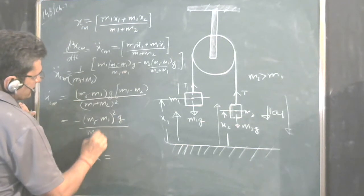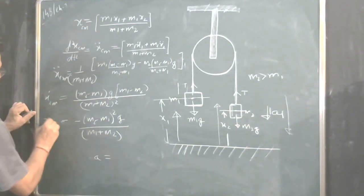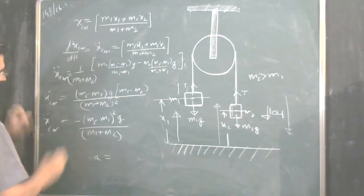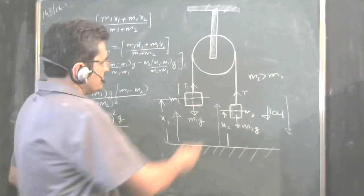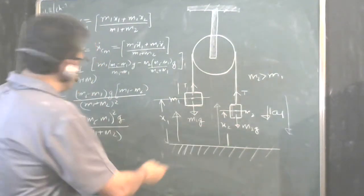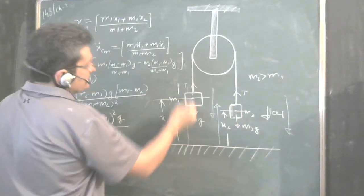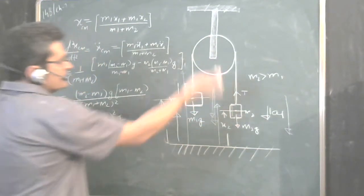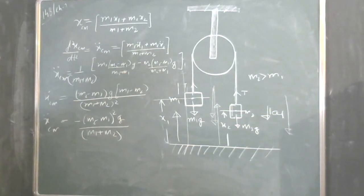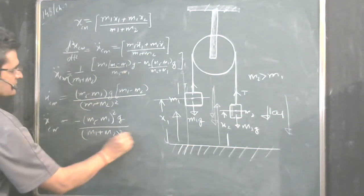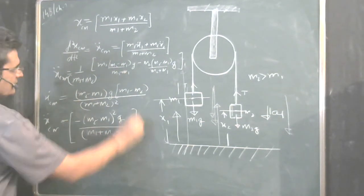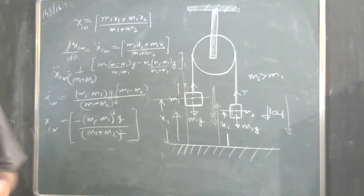It is coming negative it means the center of mass is moving downwards because x reference is upwards means our center of mass is moving with an acceleration in downward direction. This is all square so this is the answer to the problem.